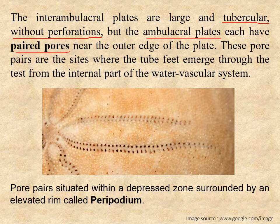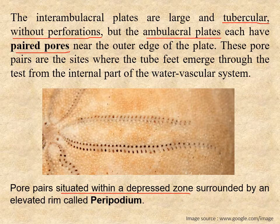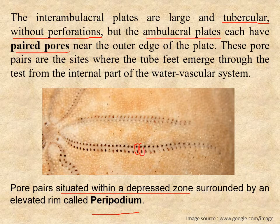Each pair of perforations in the ambulacral plate is situated within a slightly depressed zone known as peripodium. Every pair of pores occurs within a slightly elliptical to circular depressed zone surrounded by an elevated rim. This individual depressed zone is known as peripodium — basically the place where each pair of pores occurs.